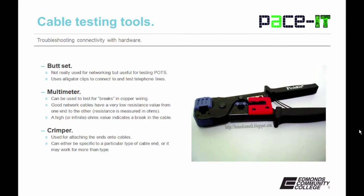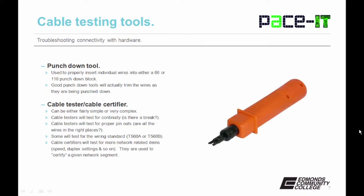Then there are crimpers. These are used for attaching the ends onto cables. Crimpers can either be specific to a particular type of cable end or they may work on more than one type. Next is the punch down tool. These are used to properly insert individual wires into either a 66 or 110 punch down block. A good punch down tool will actually trim the wires as they are being punched down to keep things nice and neat.